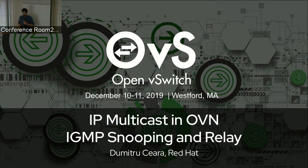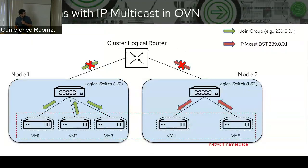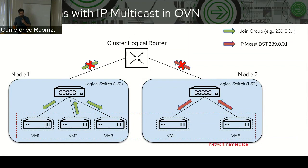I'm going to talk about IP multicast and OVN. First, I'm going to show you a use case of OVN. This is a simplified, oversimplified OVN Kubernetes topology where we have one node per logical switch. What's important here is that VMs on different nodes might be in the same network namespace, and they need to be able to communicate with each other with either unicast but also multicast.